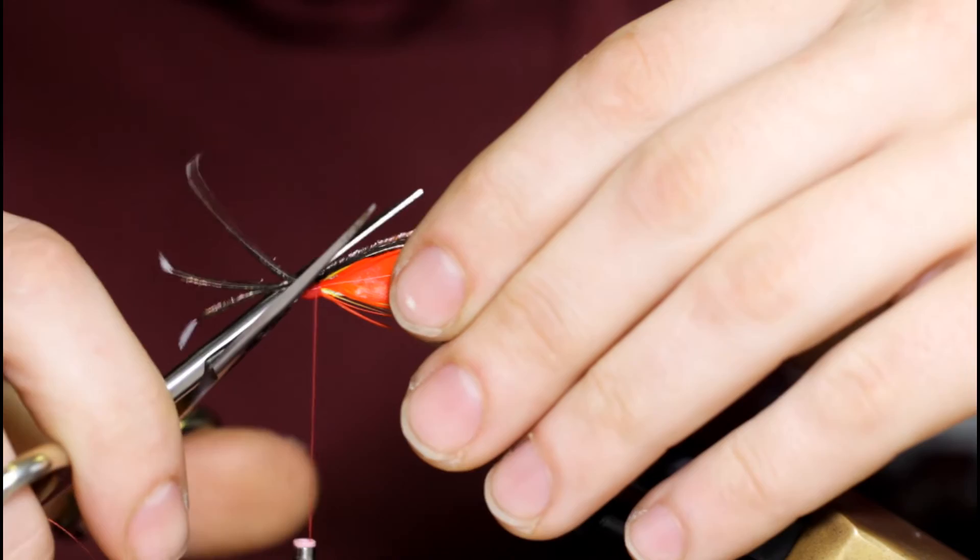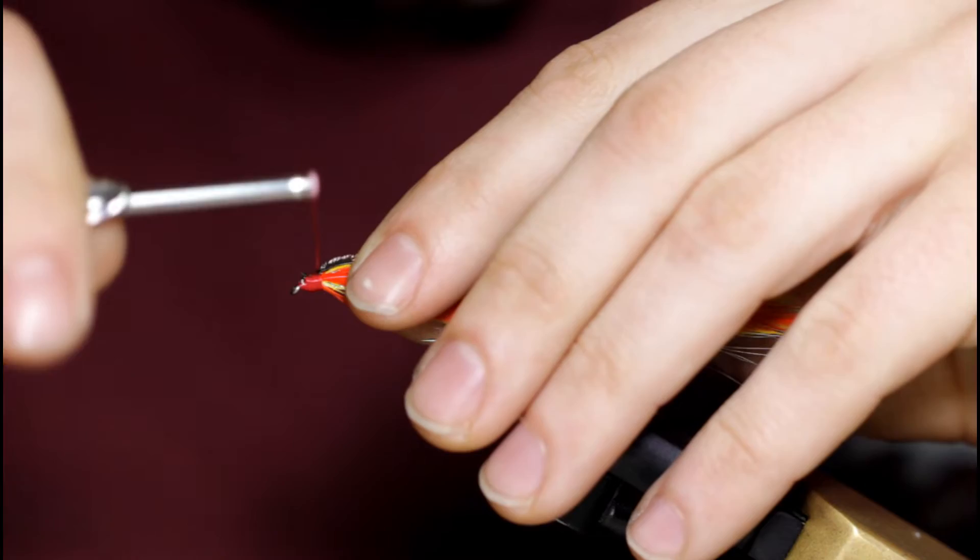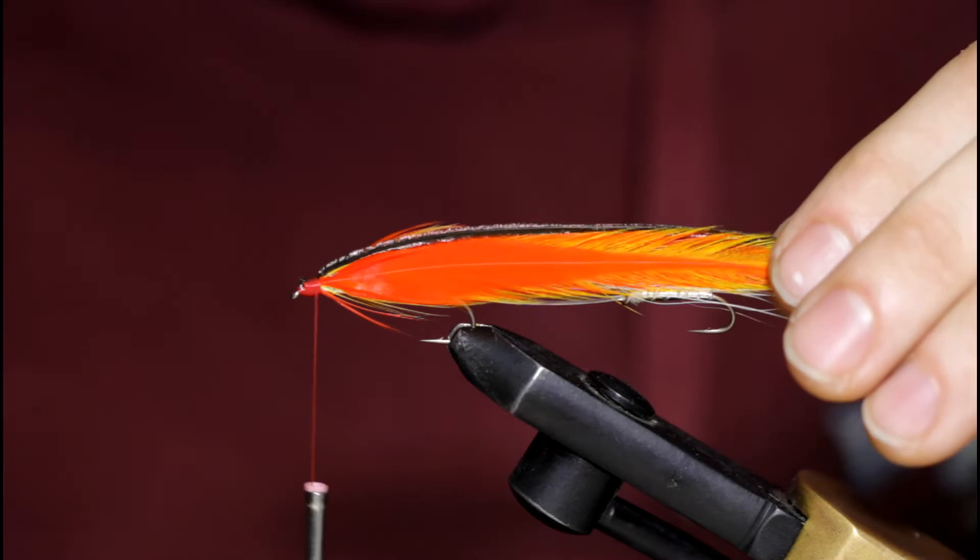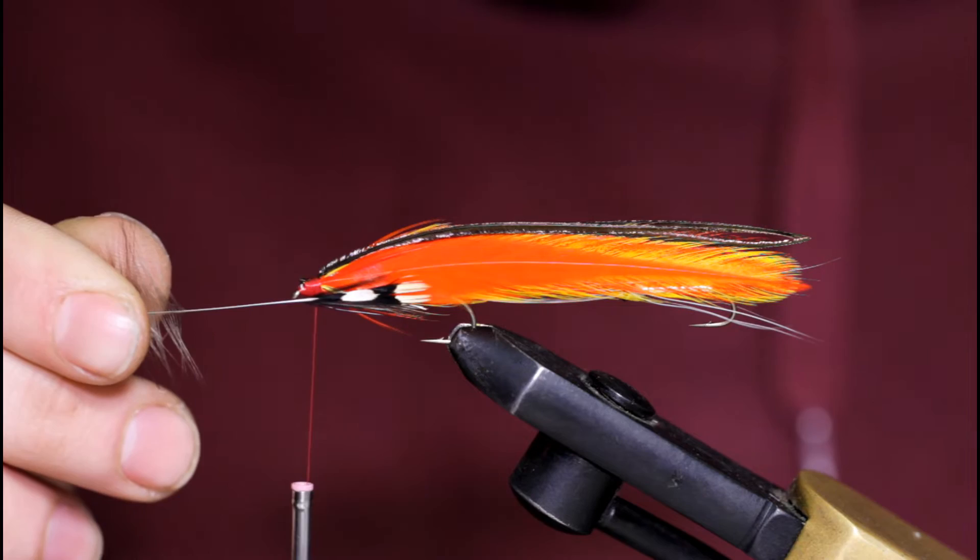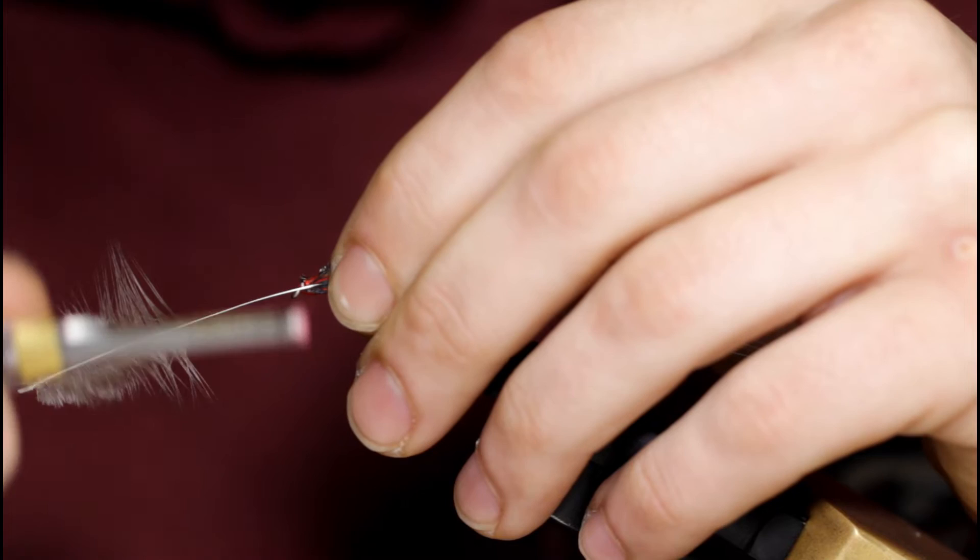But I think it's missing something. I've actually got some pale jungle cock eyes from a lesser quality cape from the top. And because they don't really have any orange on them, I think they would look pretty good with this orange fly. So I think I'm going to tie a few of these in. Yeah, that looks pretty good. So I'm going to take a few loose turns over the top here. And I'm just going to snip off that stem.